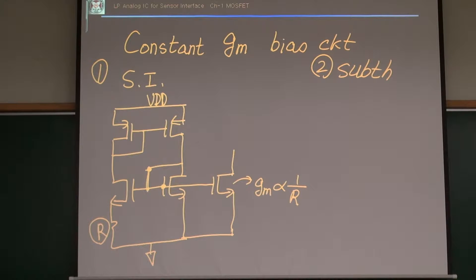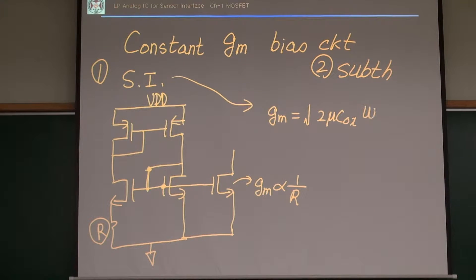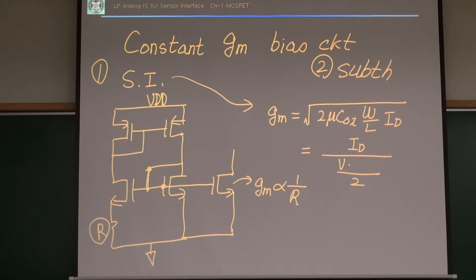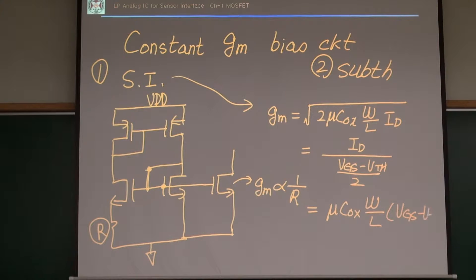In a strong inversion region, in the saturation region, gm is approximately μCox(W/L)(Vgs − Vth). This is the gm equation in a strong inversion saturation region.